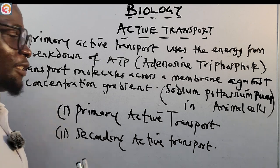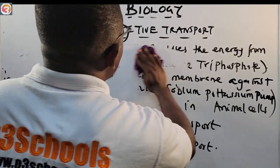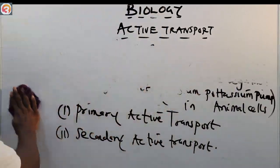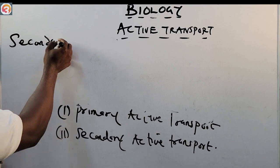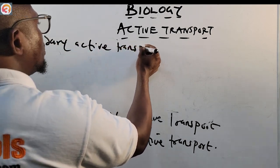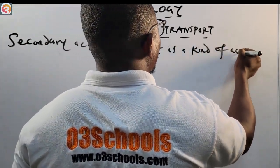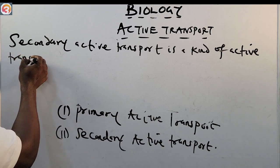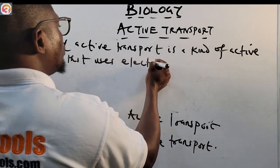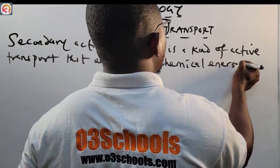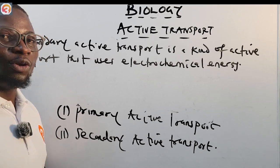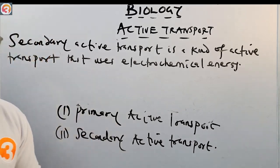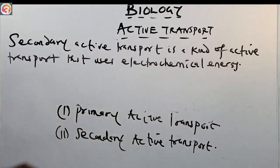Now let's talk about secondary active transport. The secondary active transport is a type of active transport that uses electrochemical energy. The molecules move in the direction of increasing electrochemical potential.